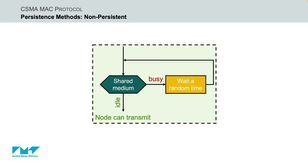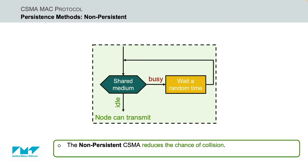To summarize, here is the flow diagram for the non-persistent CSMA method. The transmitting node senses the shared transmission medium. If it is idle, it transmits the frame; else it waits a random time and starts the same procedure again. The non-persistent approach reduces the chance of collision. Indeed, there is a lower probability that two or more nodes will wait the same random amount of time and retry to transmit simultaneously. However, this approach reduces the efficiency of the network because the shared medium remains idle when there may be nodes with frames to transmit.